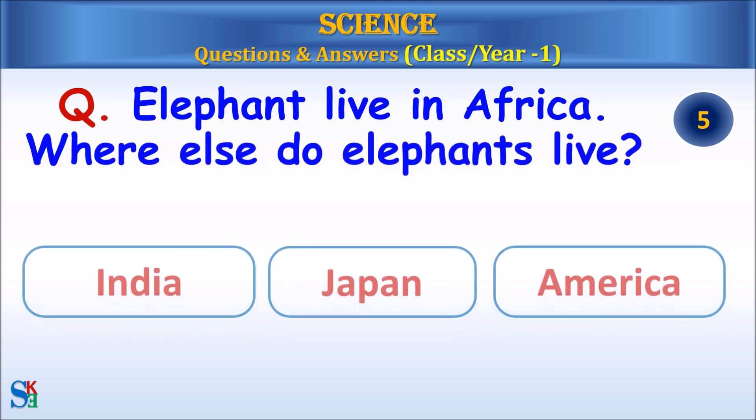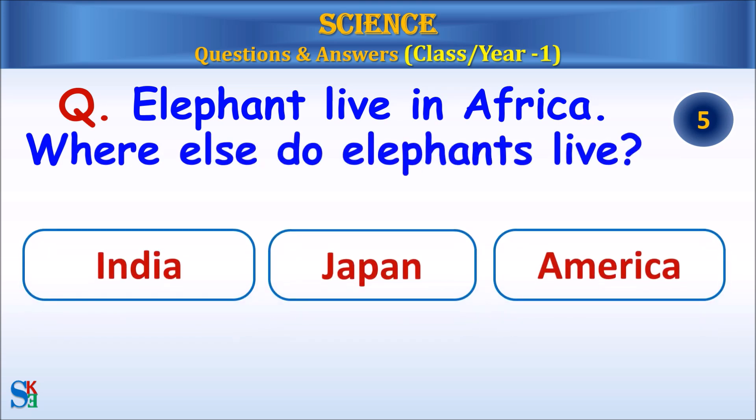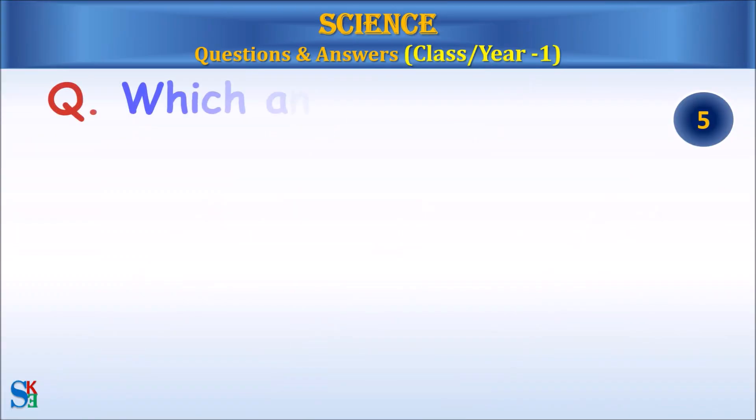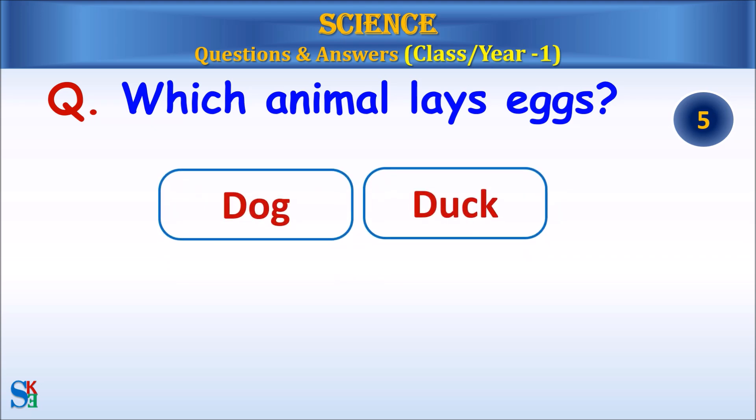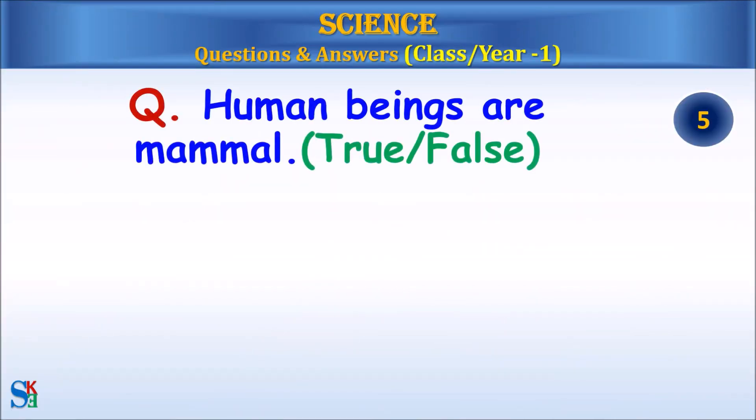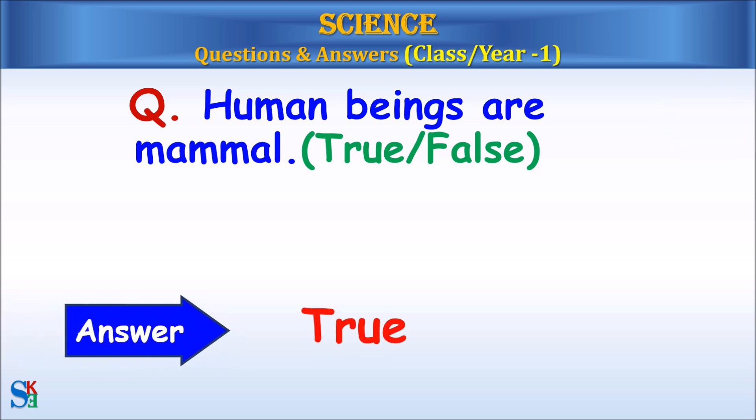Elephants live in Africa. Where else do elephants live, India, Japan, or America? Answer: India. Which animal lays eggs, dog or duck? Answer: duck. Human beings are mammals, true or false? Answer: true.